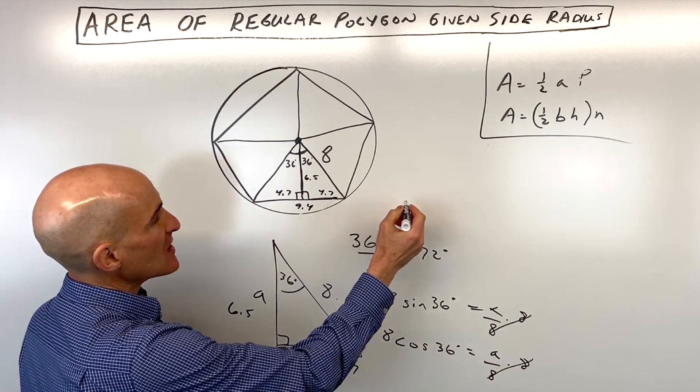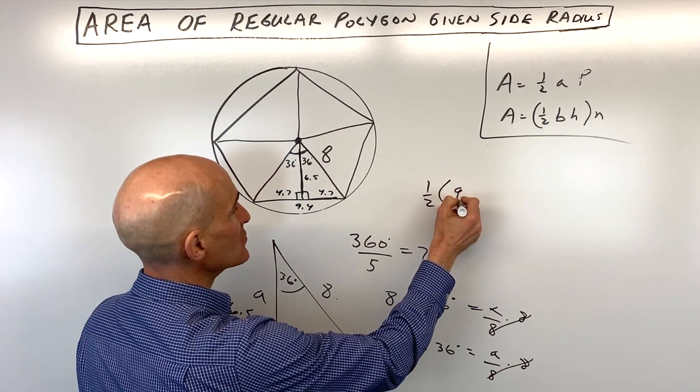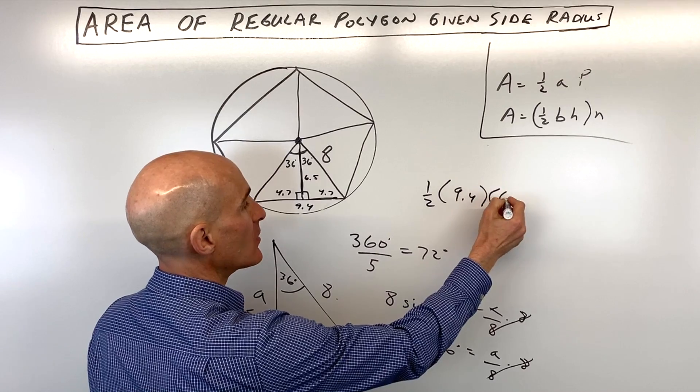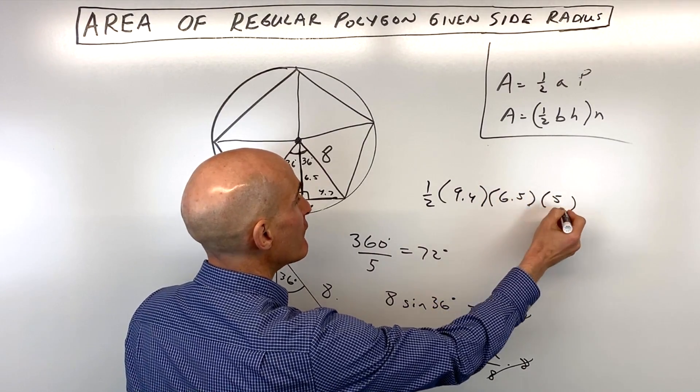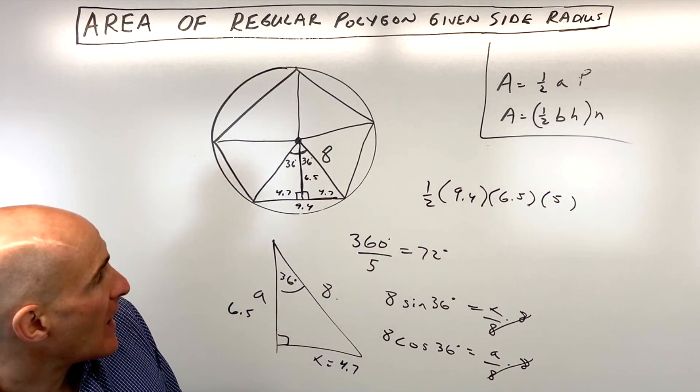So if we want to find the area, we just have to do 1 half the base, which is 9.4, times the height, which is 6.5, times 5 of these triangles, and we've got our area.